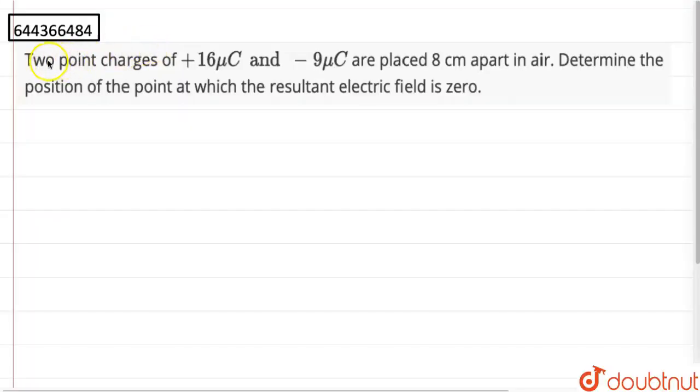Hello, so the question here is: two point charges, +16 microcoulombs and -9 microcoulombs, are placed 8 centimeters apart in air. Determine the position of the point at which the resultant electric field is zero.